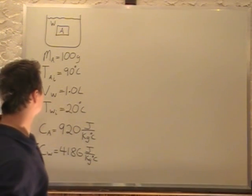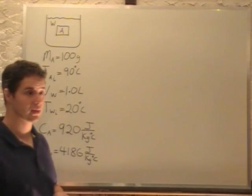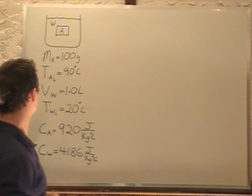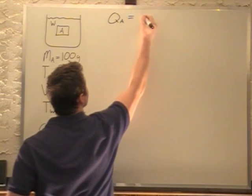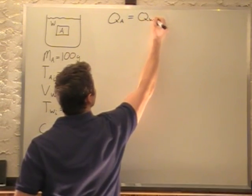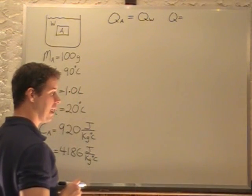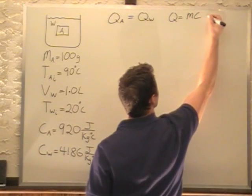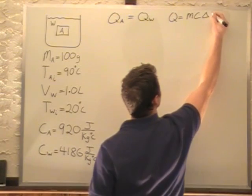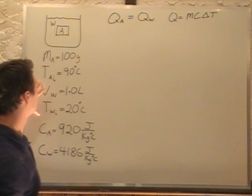Now we know that the heat lost by the aluminum is the heat gained by the water, and that's how we're going to approach this. The heat lost by aluminum has to equal the heat gained by the water. That heat transfer Q is given by Q = mcΔT, mass times specific heat times change in temperature.